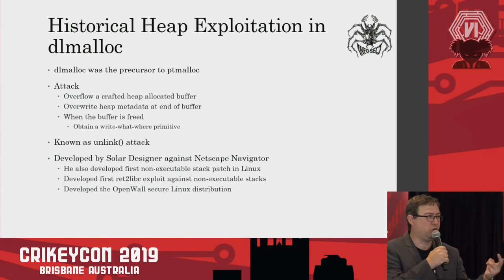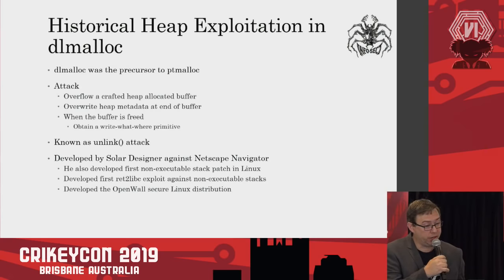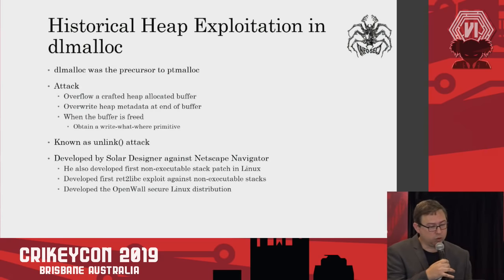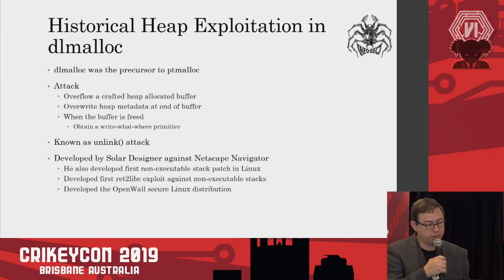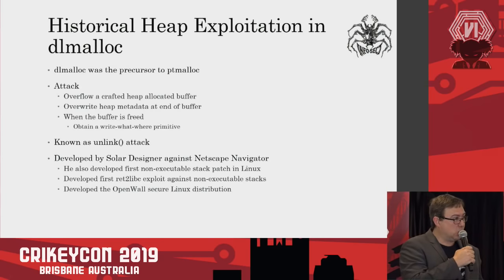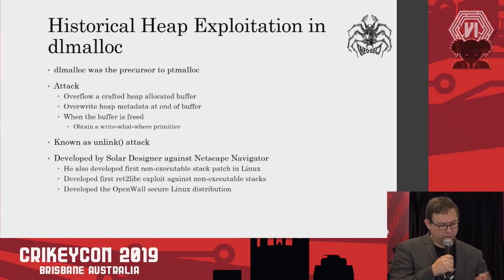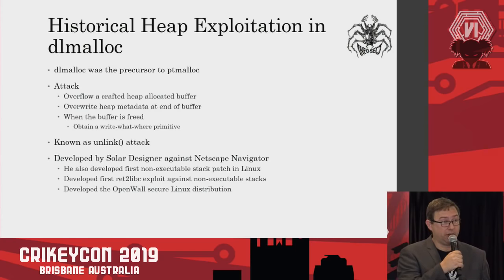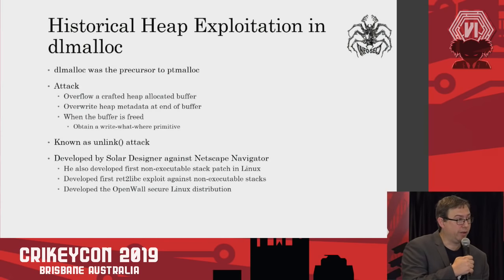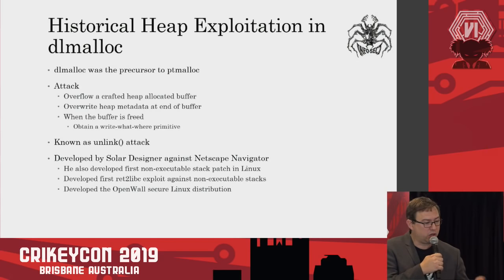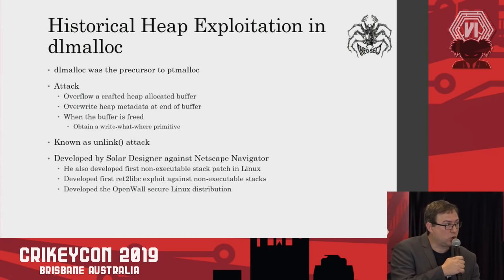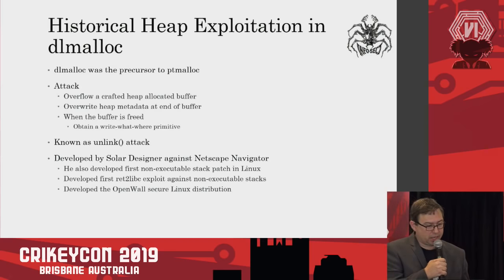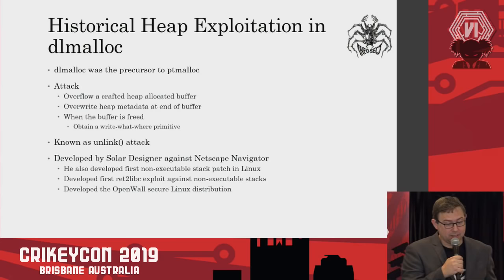A quick historical precursor: almost 20 years ago we have DL malloc — Doug Lee's malloc — which was the precursor to the current PT malloc. Basically there was an attack from around 2001 where you could overflow a heap-allocated buffer, overwrite the metadata, and when that buffer is freed, an attacker gains a write-what-where primitive. A write-what-where primitive means you can write what you want in memory, where you want it, and you can modify function pointers so your attacker code hijacks control flow. This attack is known as the unlink attack, developed by Solar Designer against Netscape Navigator.